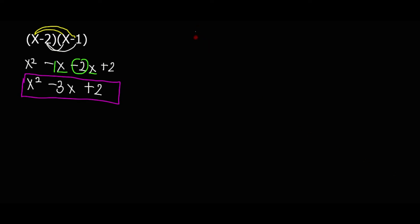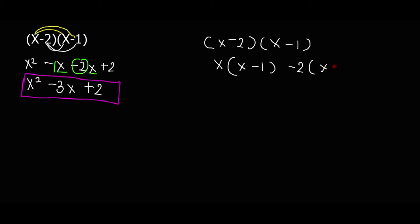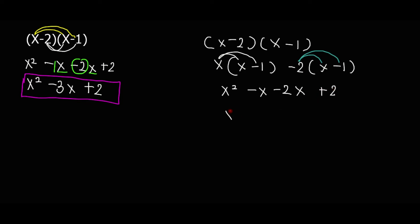So this is our answer. Now the second method — the FOIL method: x times x is x squared, x times negative 1 is negative x, negative 2 times x is negative 2x, and negative 2 times negative 1 is positive 2. From here I add like terms: x squared minus x minus 2x is minus 3x, plus 2. So this is our answer.